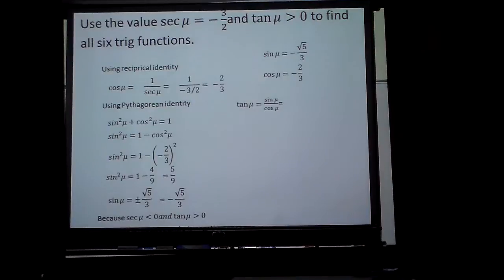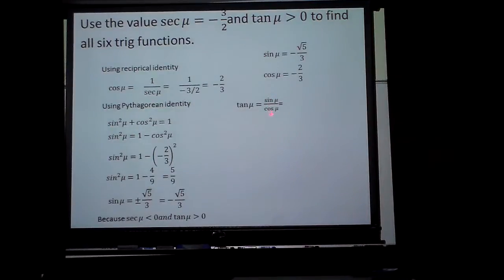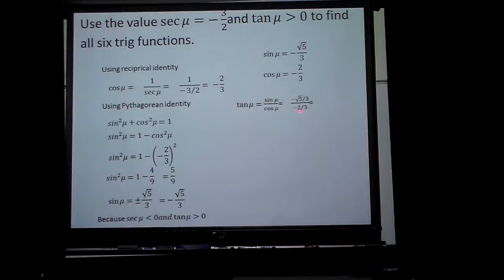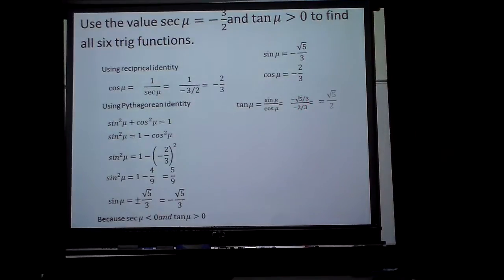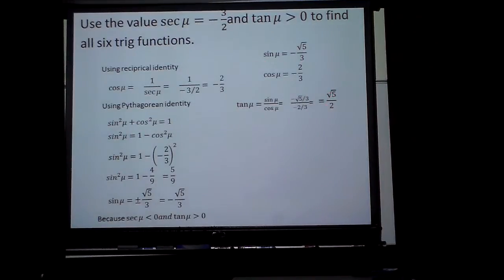How can I find the tangent? Well, we think about the quotient identity. Sine divided by cosine. What's going to be nice is you really multiply by the reciprocal of the bottom one, but the 3's are going to cancel. So, I have negative 5 over negative 2, which makes positive square root of 5 over 2.